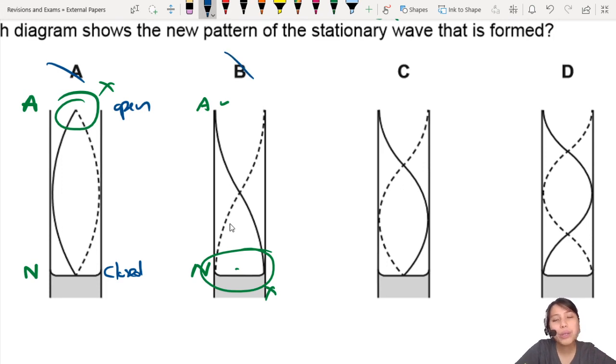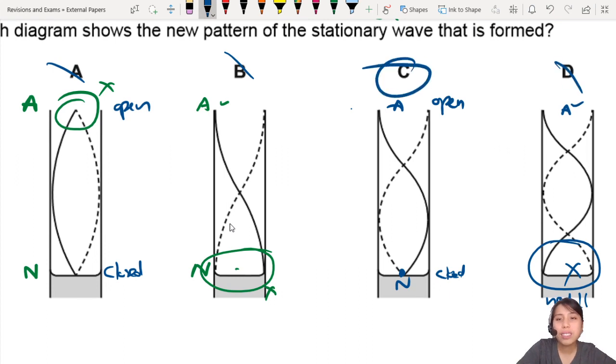C, very good. The boundary where it's closed is a node. The boundary where it is open is an antinode. Very good. Okay, D. What's wrong with D? Ah, you can see this. So this one here should be a node. It's wrong. It should be a node. And this one here, antinode—that's fine.